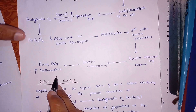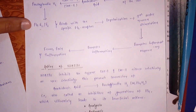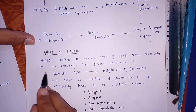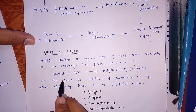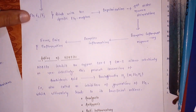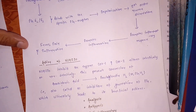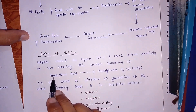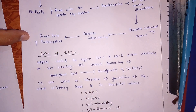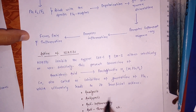What the NSAIDs do is basically inhibit the enzymes cyclooxygenase-1 and cyclooxygenase-2, either selectively or non-selectively, which prevents the conversion of arachidonic acid into prostaglandin H2. This arachidonic acid is formed from the lipids and phospholipids of the particular cells where the injury has occurred. Thus, NSAIDs prevent the conversion of arachidonic acid into prostaglandin H2, stopping the process — also called inhibition of prostaglandin generation.